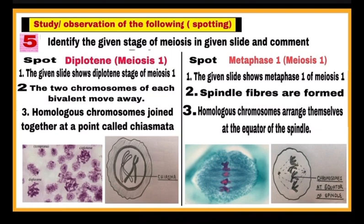Next part of this category is metaphase 1 of meiosis 1. After looking at the slide, write the characteristic features of metaphase 1 meiosis 1. Point one: the given slide is the metaphase 1 meiosis 1 stage. Point two: spindle fibres are formed. Point three: homologous chromosomes arrange themselves at the equator of the spindle. After writing this, draw the diagram and label the parts.